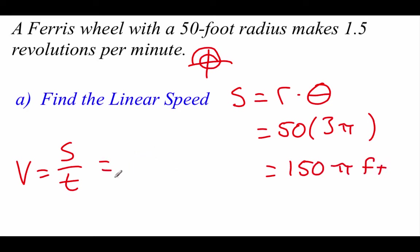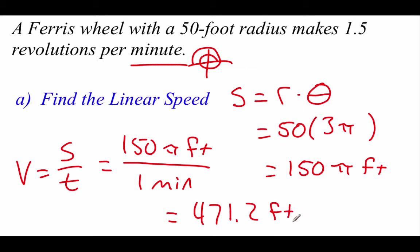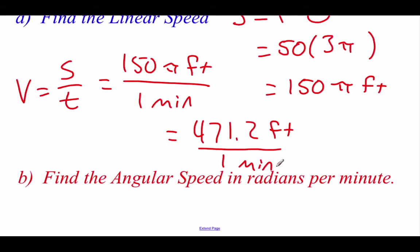So if we plug that into our formula over here, 150 pi feet over, well, our time is just one minute, doing a little calculator work. If we take 150 times pi, we get 471.2 feet over one minute. So we could just say it's 471.2 feet per minute.